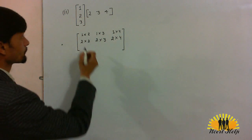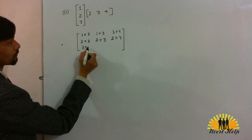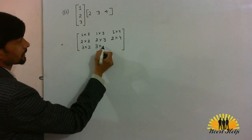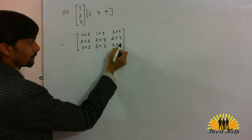Similarly, for the third row, 3 into 2, 3 into 3 and 3 into 4.